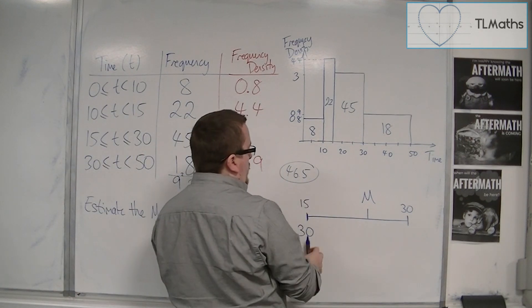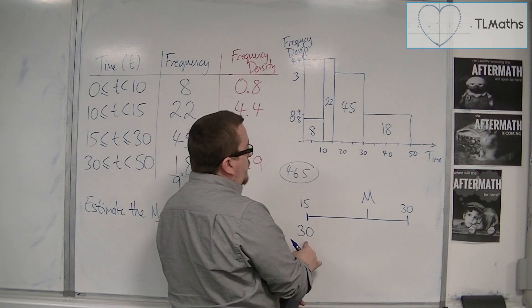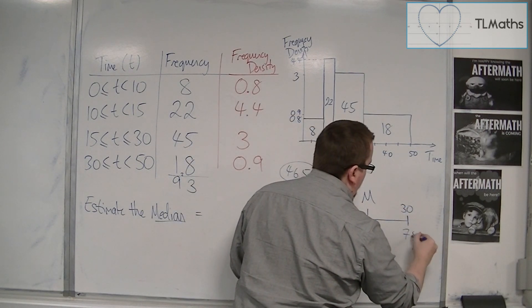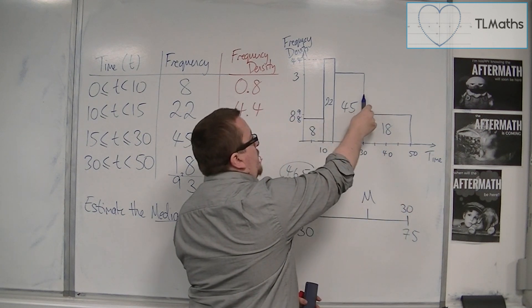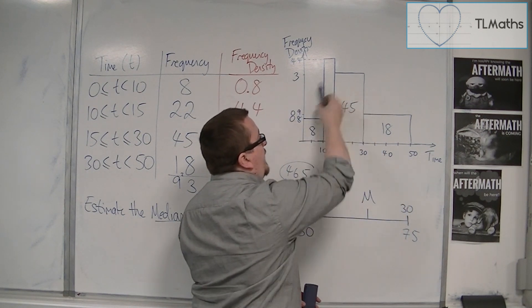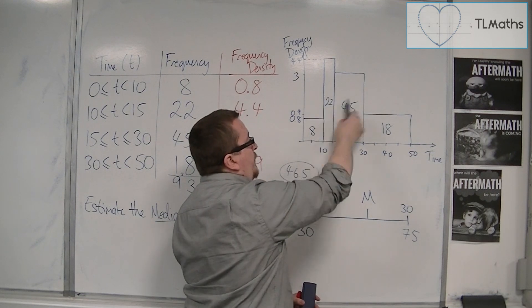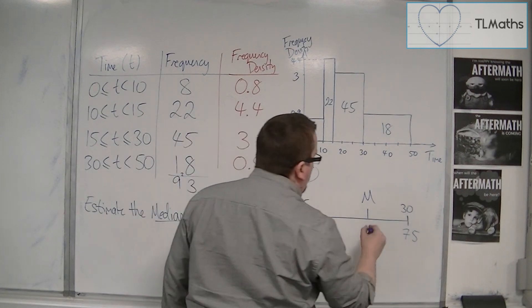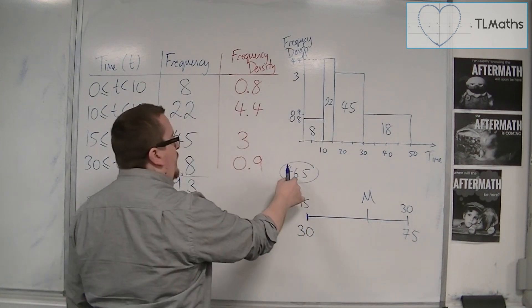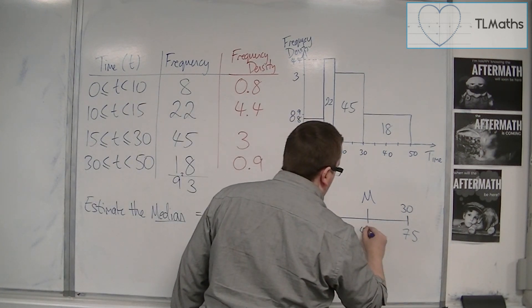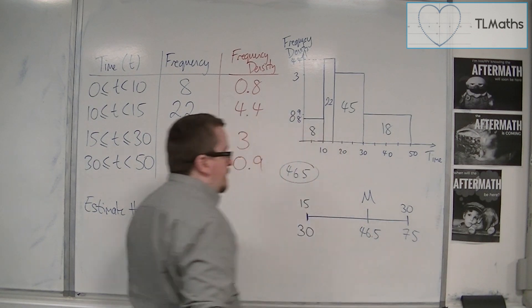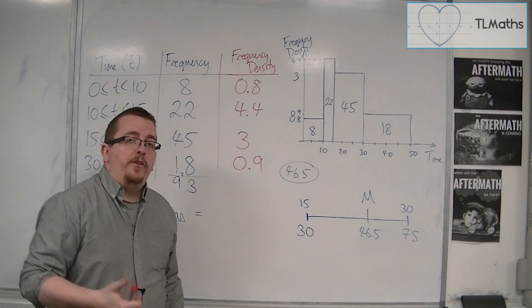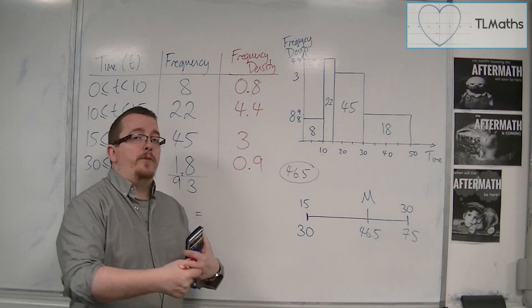How I can look at this is I can go, 8 and 22 would be 30. So I know that there are 30 data points below that 15. And I then know that at its maximum point I will be at 75. By on this point there are 75 bits of data. The frequency. Total frequency. And then we've got the remaining 18 afterwards. Now the median is going to appear at the 46.5th bit of data.